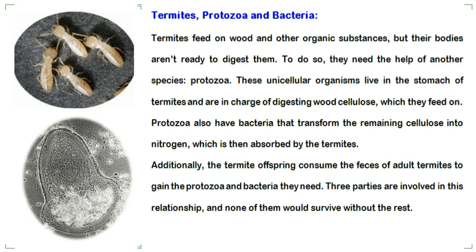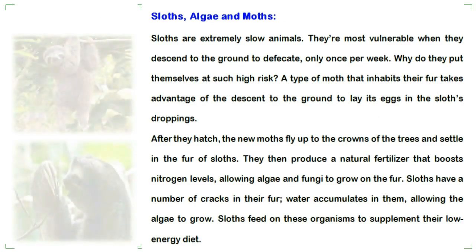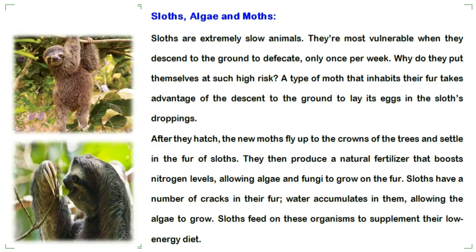Termites feed on wood and other organic substances, but their bodies cannot digest them. To do so, they need the help of another species — protozoa. These unicellular organisms live in the stomach of termites and are in charge of digesting wood cellulose, which they feed on. Protozoa also have bacteria that transform the remaining cellulose into nitrogen, which is then absorbed by the termites. Additionally, termite offspring consume the feces of adult termites to gain the protozoa and bacteria they need. Three parties are involved in this relationship, and none of them would survive without the rest.